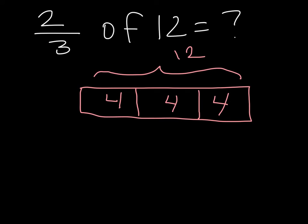What happens when I do that? I go from having 1 third as 4 to having 2 thirds as 8. So 2/3 of 12 is 8.